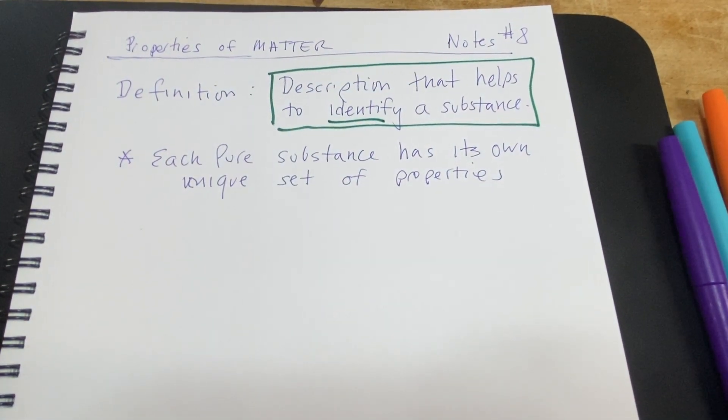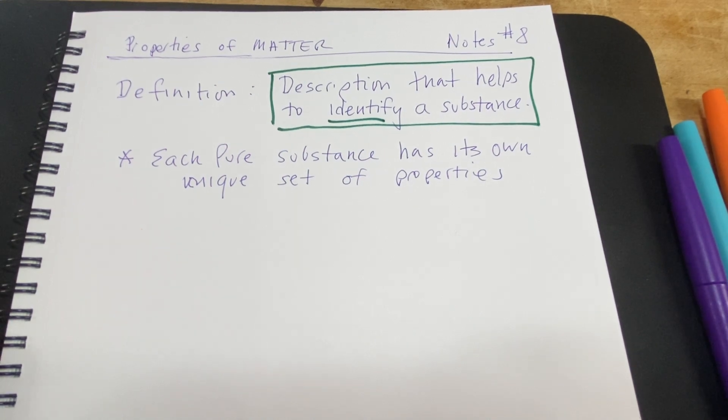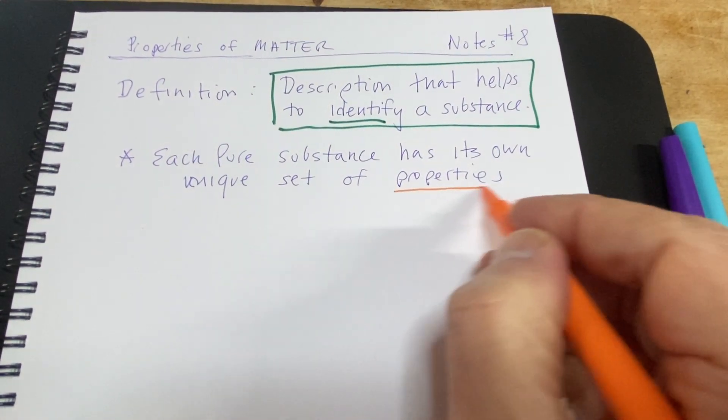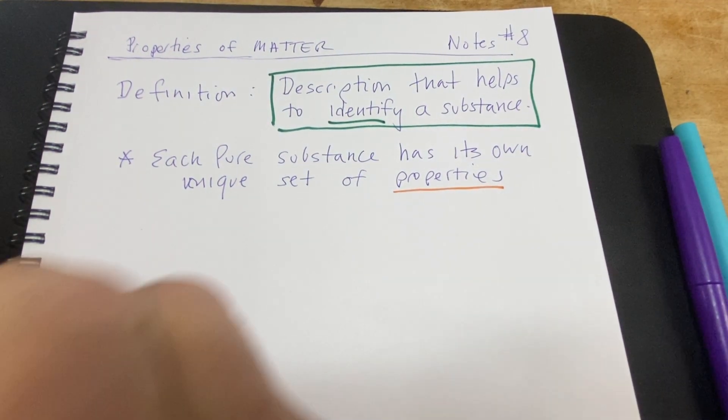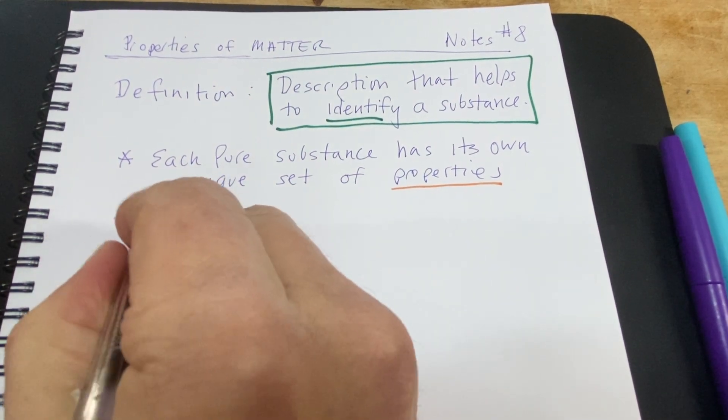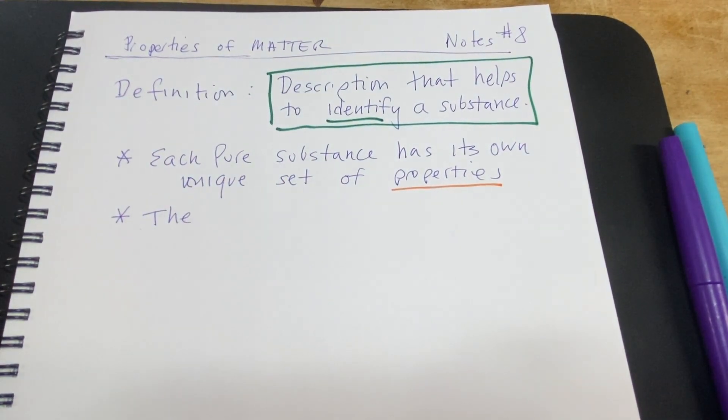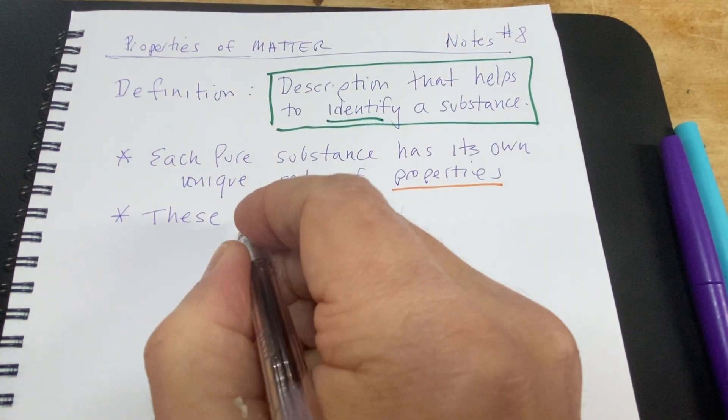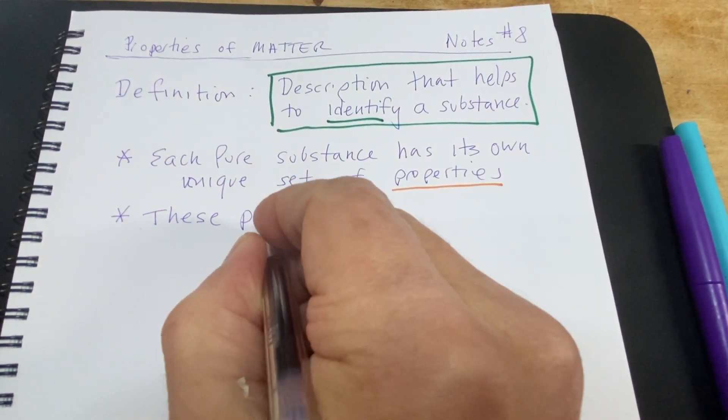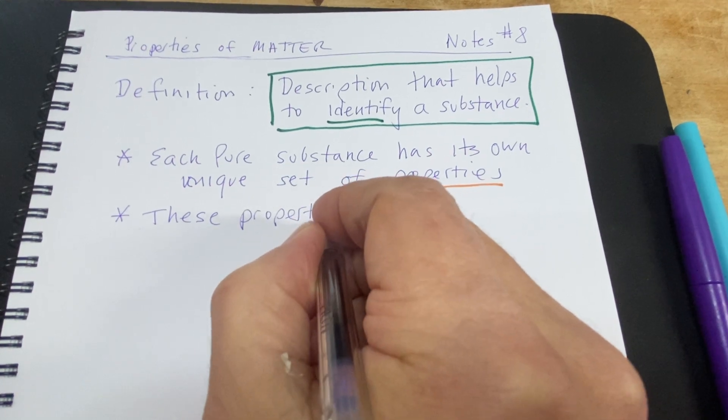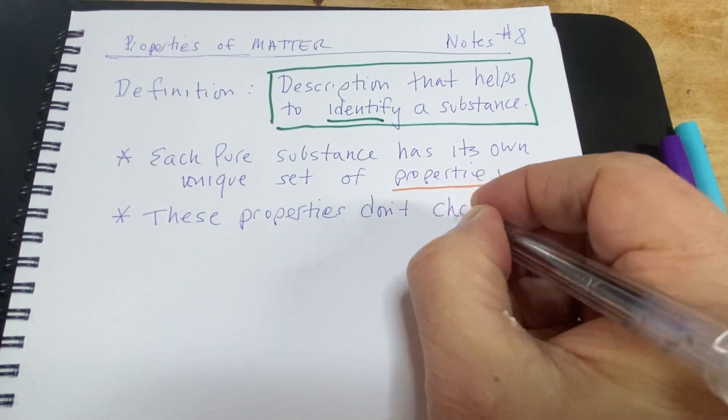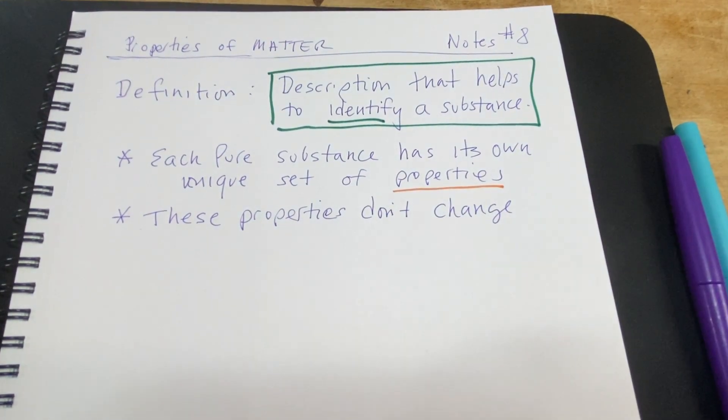So a unique set of properties - what do we mean by the word property? That sort of begs that question. It's something we'll talk more about, but basically these things are descriptions. We sort of played around with it at the beginning of class. These properties don't change based on how much of it you have.